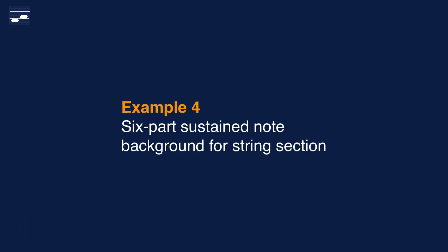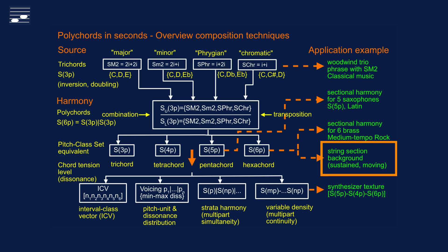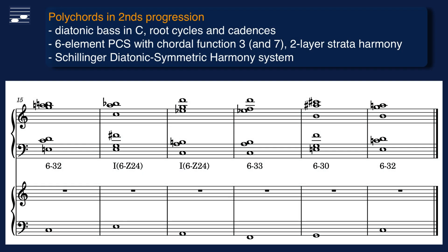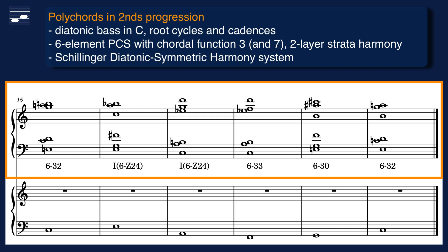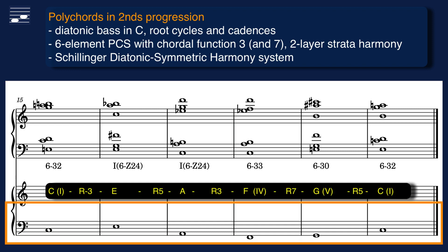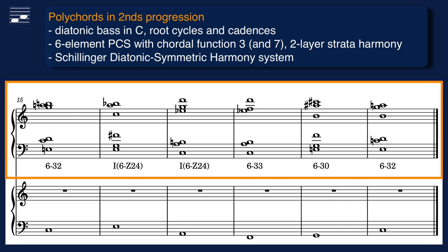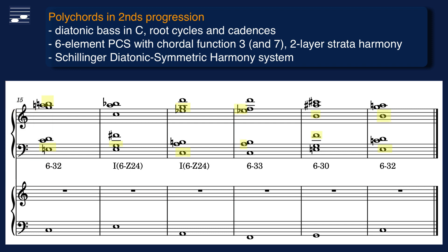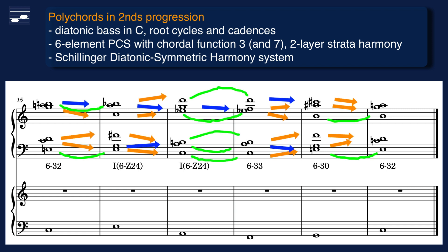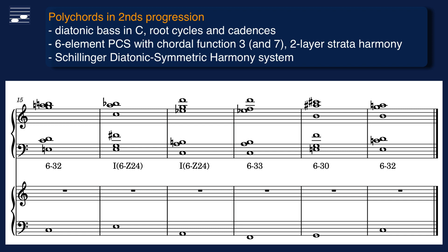The fourth example is a background for string section — a two-layer polychord setting with two different results. We return to the chord progression from example 3 in part 1, where we used a series of six hexachords written as polychords in two layers to create a sectional harmony phrase for brass section. The example starts from a diatonic bass part in C major. In each layer we find three-note chords in seconds. I chose those polychords from the overview sheets that contain the essential chordal function 3 in the setting and optionally the 7, as discussed in part 1. In Schillinger System terminology, this progression may be labeled as diatonic symmetric harmony. I applied Strataharmony voice leading in each of the two layers.